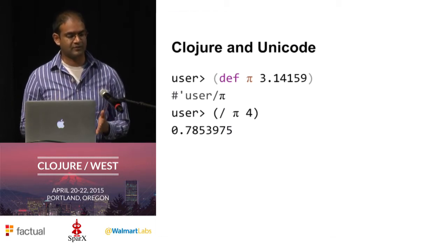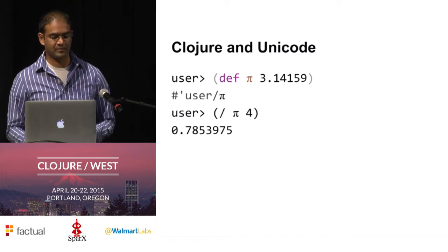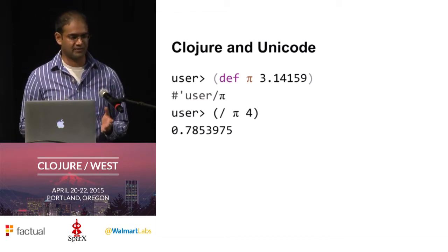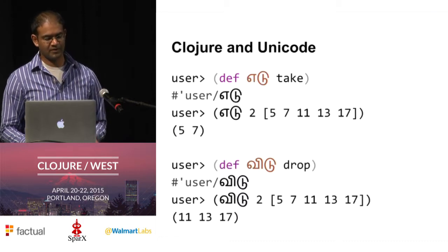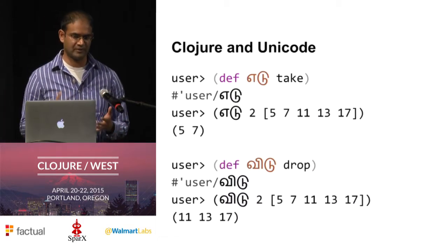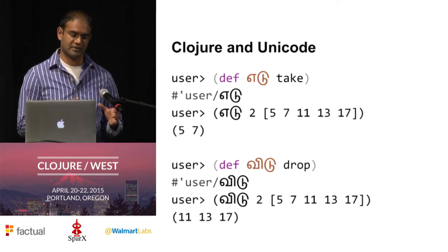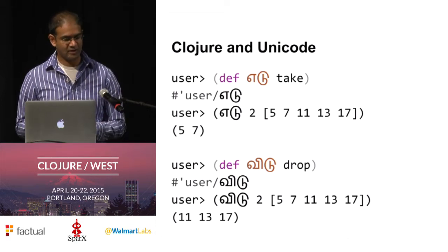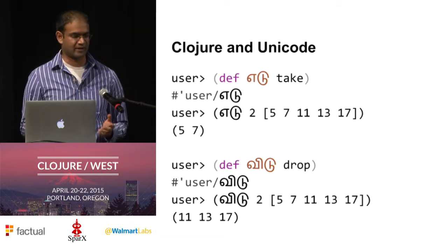Here I have def with the Greek letter for pi, and then an approximation for pi. Now I can use this Greek letter pi just as I would any other binding. Functions are values, so let me do this for functions and use Tamil words. I said def irdu for take, def virdu for drop, and now I can use irdu and virdu just like I can use take and drop.